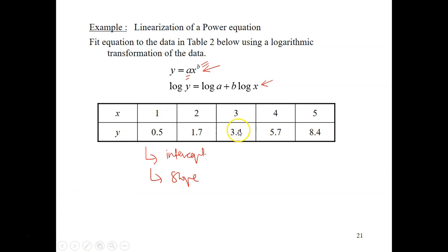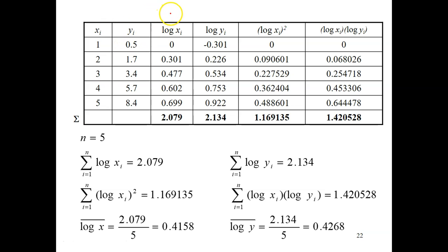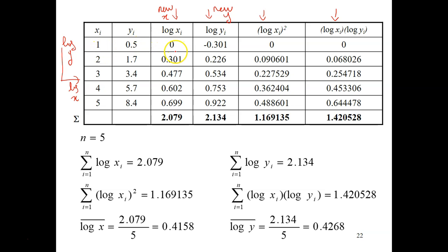Given are x and y data — only five data points. You need to come up with a new table with additional columns to calculate the slope and the intercept. The new x is log x and the new y is log y. So log(1) gives 0, log(2) gives 0.301, log(3) gives 0.477, and so on. The extra columns are log x squared and log x times log y.